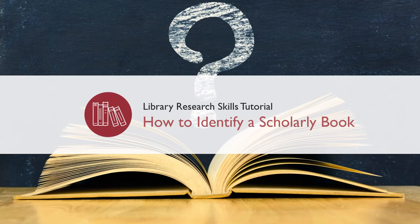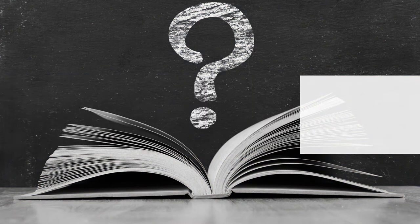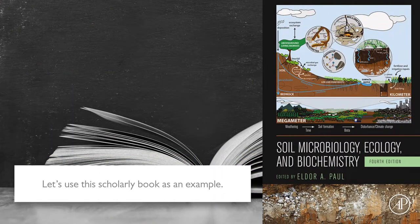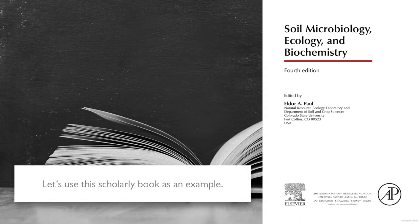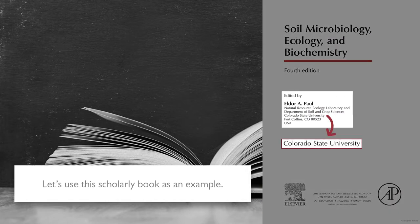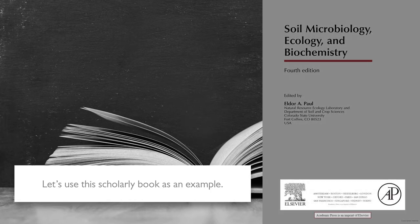How to identify a scholarly book. Let's use this scholarly book as an example. Here's the title page. The editor is affiliated with an academic institution. The publisher, Academic Press, is an imprint of Elsevier, a scholarly press.